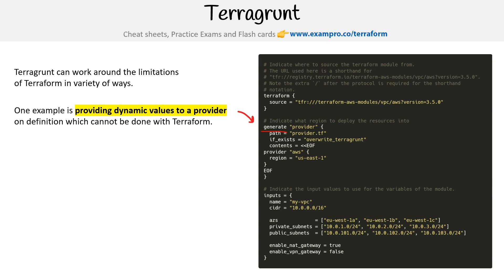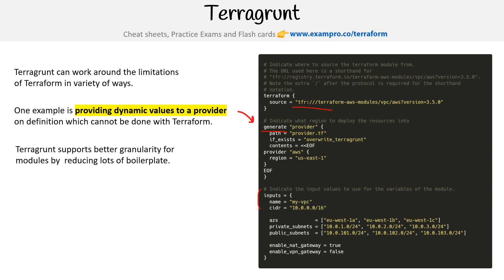Another really interesting thing is that Terragrunt supports better granularity for modules by reducing lots of boilerplate. The way they do this is that you are referencing your Terraform files via the source here. So you're not including your modules within your code, you're just referencing them and then passing along their inputs.